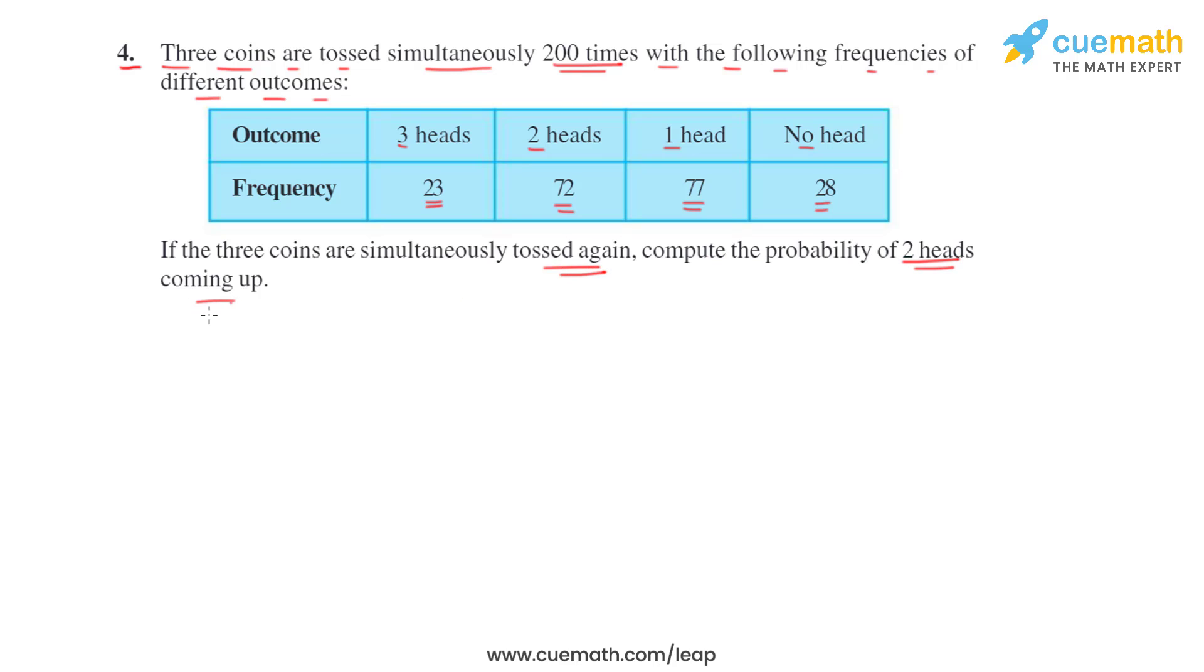That is, we have to find the probability of two heads, so it will be number of times two heads appeared by total number of times coins were tossed.